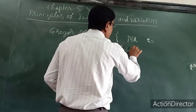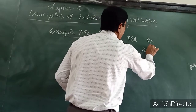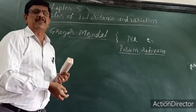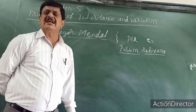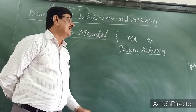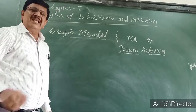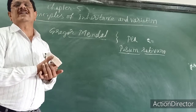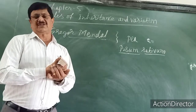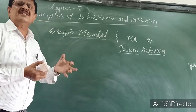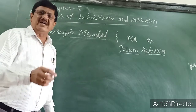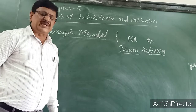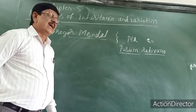The botanical name of pea plant is Pisum sativum. It belongs to the family Papilionaceae. In pea plants, Mendel identified the characters — he identified two contrasting traits for each character.